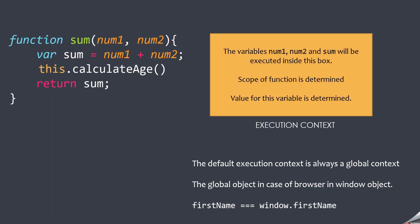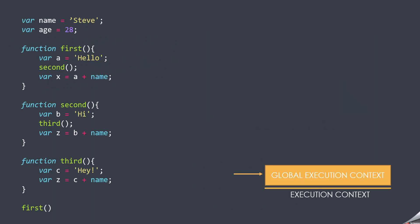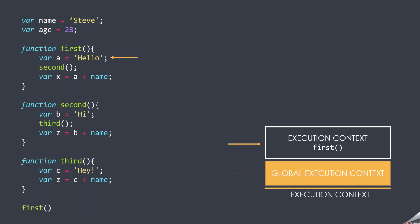Here we have an example program with two global variables and three global functions. When you run this program, a global execution context will be created, and inside this global execution context, all the global variables and functions will be stored and executed. Inside this global scope, we are calling this first function, so the first function will be called from the global execution context, which is currently the active execution context. Once this first function is called, a new execution context for it will be created on top of the currently executing execution context.